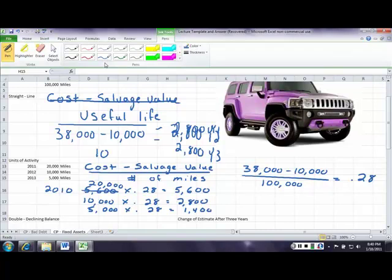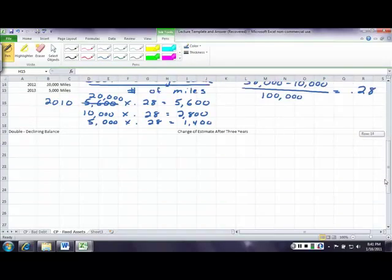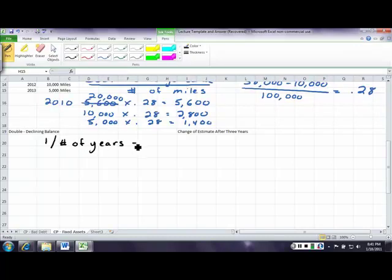I think those are the two easiest methods. Where students have a hard time is when we get into double declining balance. There's a lot of ways to do this, so I'm going to write the formulas in black that I have found over the years is the easiest.